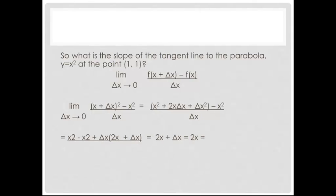Now we simplify. The x squared minus x squared cancels out and goes to zero. Then we factor out delta x from the numerator: delta x times (2x + delta x), all divided by delta x. Delta x divided by delta x is 1, so that cancels out. Note that you can't bring delta x to zero when it's in this form because you can't divide by zero — but no matter what formula you plug in, the delta x will always cancel out like that. You're left with 2x plus delta x.